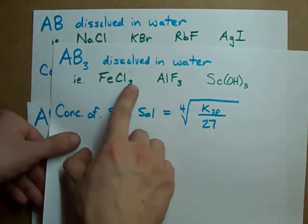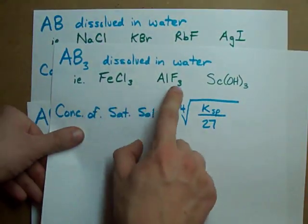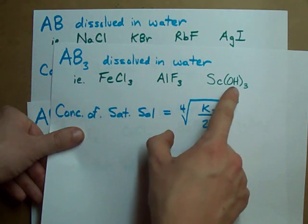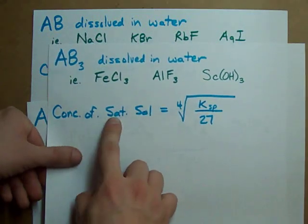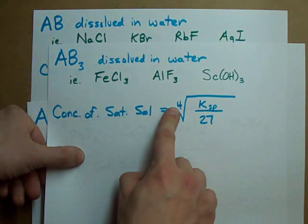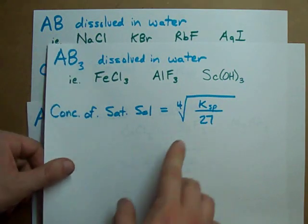Finally, if you have a little 3 at the end - FeCl3, AlF3, or Sc(OH)3 - your concentration at saturation is the fourth root of your KSP divided by 27.